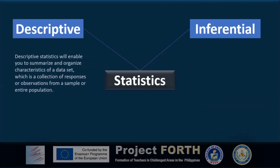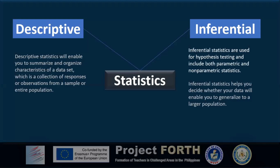We classify statistics as descriptive or inferential. Descriptive statistics enables us to summarize and organize characteristics of a data set, which is a collection of responses or observations from a sample or entire population. For inferential statistics, we use hypothesis testing and may consider parametric or non-parametric statistics. Inferential statistics helps us decide whether data collected from a sample can be generalized to a larger population, which must be defined by the researcher.